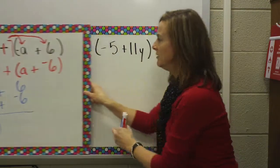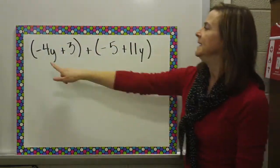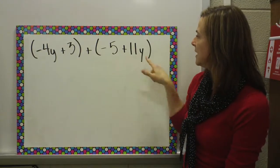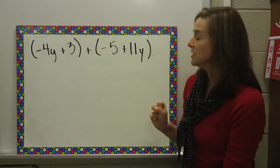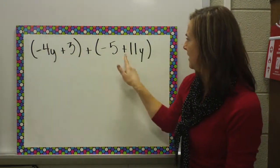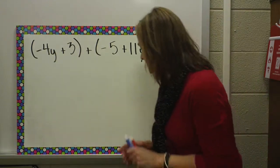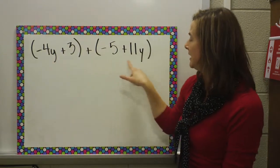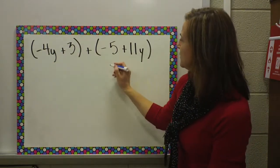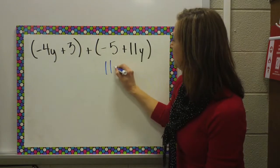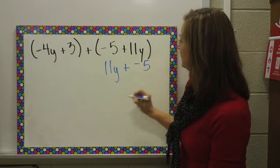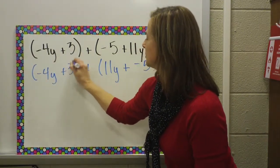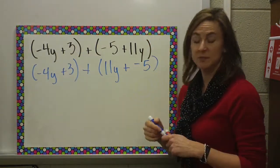In my third example, I have negative four Y plus three plus negative five plus eleven Y. First, change to all addition — well, I have all additions, so I'm okay there. Next, it says reorder the variables. Here I have the variable term first and the constant, but here I have to reorder. So this is going to become eleven Y plus a negative five. This side stays the same, so I'm just going to bring it down. Now my problem is written correctly.